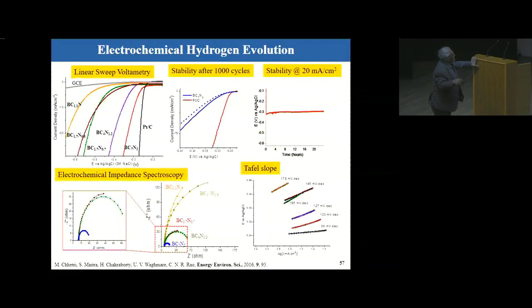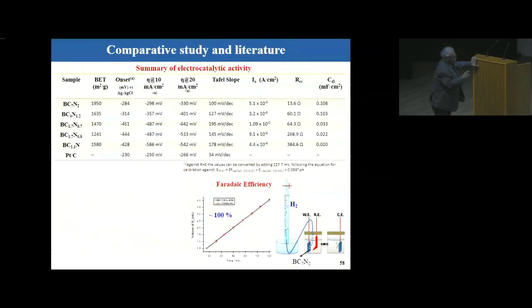It has just come out, this work in energy and environmental science. And you see, we varied all kinds of composition. I show one composition. This composition, this is platinum. This composition, look at the onset potential. Same as platinum, almost the same. And it's very stable, and very little charge transfer resistance. And look at the values. Look at the onset potential of my compound. I can vary this also further. It's 284 millivolts. Platinum is 230 millivolts. Pretty close. I can even do better. And then, over potential, this is 298, this is 250. Pretty close. I can do better.